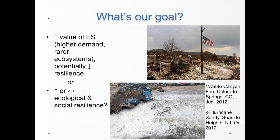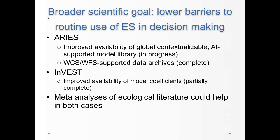Overall, if we have higher demand and rarer ecosystems, we may have greater value but lower resilience. Ideally, in a management context we should think about increasing both ecological and social resilience. This underscores the importance of thinking about both the supply and demand sides of ecosystem services, particularly in the context of climate change. We don't have to look very far to find examples of climate change having severe impacts on human communities in the very recent past.